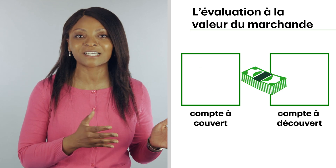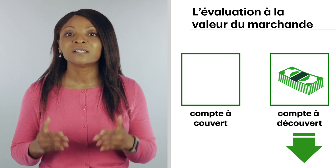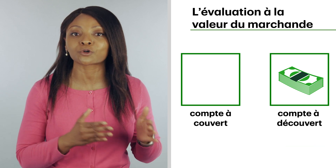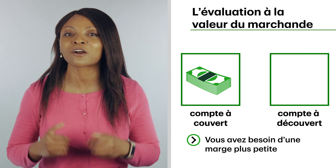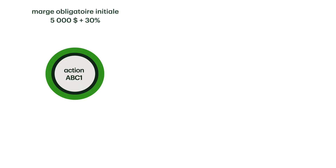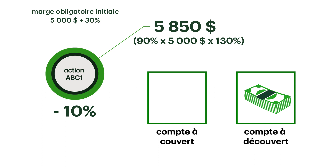If your short positions move up in value — meaning you're losing money on your trade — then cash is moved from your long account to your short account. But if your short stock goes down in value, some of the cash that you can't touch in your short account is moved to your long account, because less margin is now required. For example, if the next day our stock drops ten percent, the margin required decreases to five thousand eight hundred and fifty dollars. Because of this six hundred and fifty dollar improvement on margin, you'll also see a mark to market adjustment moving from your short account to your long account.